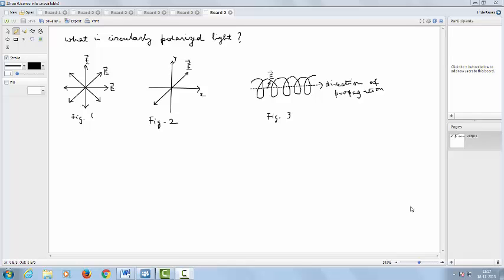In ordinary light, the E vector is not confined to a single plane but vibrates in all planes between 0 and 360 degrees. This we have shown in figure one, in which the direction of propagation of the light is towards you and the E vector can be in any one of these planes that I have shown.